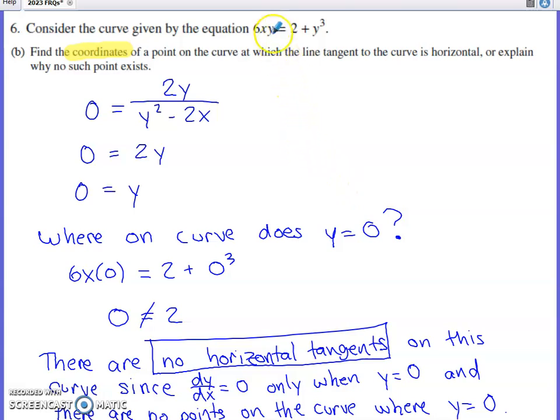If we're on the curve, that means we satisfy the original equation, the equation that graphs the curve. If I put 0 in place of the Y's to answer this question in the original equation, what I end up with is I end up with 0 equals 2. Obviously, that's not a true statement, and what that tells us is that there's not a point on the curve where Y is equal to 0, and therefore this equation, the graph of it, doesn't have any horizontal tangent lines.